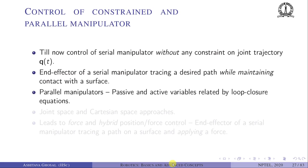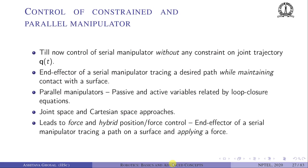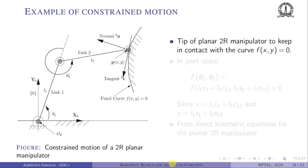Similar to constrained serial manipulators, we also have parallel manipulators in which passive and active joint variables are related by loop closure constraint equations. Constraints appear, but as we will see it is different from control of constrained serial manipulators. We can control the motion of a serial manipulator with constraints either in joint space or Cartesian space, leading to force and hybrid position-force control of a serial robot.